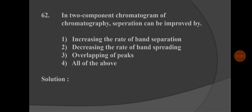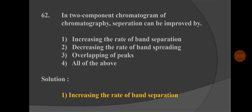Next question: In a two-component chromatogram, chromatography separation can be improved by — option 1: increasing the rate of band separation, option 2: increasing the rate of band separation, option 3: overlapping of peak, option 4: all of the above. The correct answer is option 1: increasing the rate of band separation.